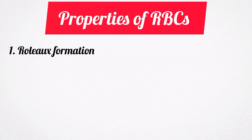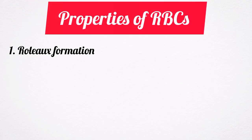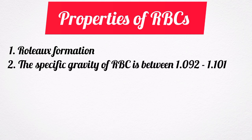Now let us talk about the properties of red blood cells. The first property is what we call rouleaux formation. When blood is taken out of the blood vessel, the red blood cells usually pile up one above another like a pile of coins. This property is called rouleaux formation. It is accelerated by plasma proteins called globulin and fibrinogen. The specific gravity of red blood cells is between 1.092 to 1.101.